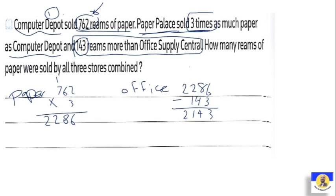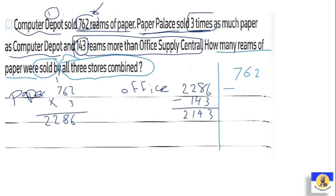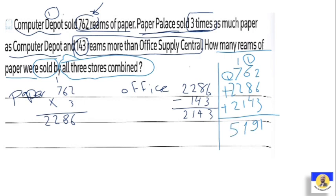How many reams of paper were sold by all three combined? Computer Depot sold 762, Paper Palace sold 2,286, and Office Supply sold 2,143. Adding them all: 2 plus 6 plus 3 is 11 carry 1; 7 plus 8 plus 4 plus 1 is 20 carry 2; then carry forward gives 5,191. So the answer is 5,191.